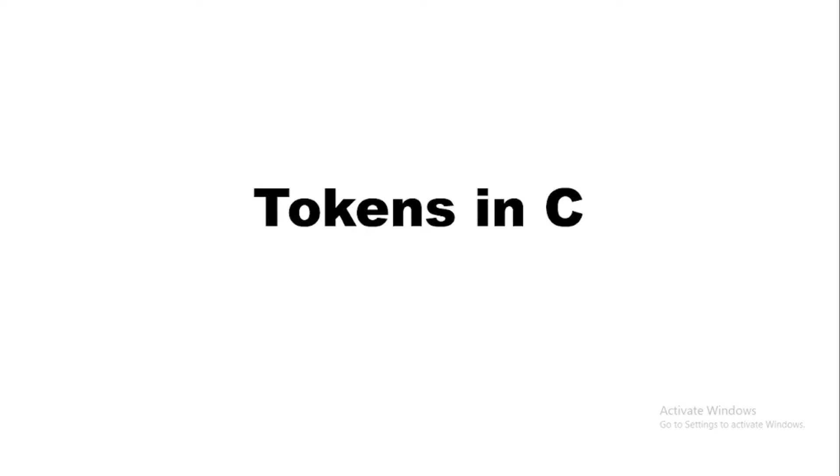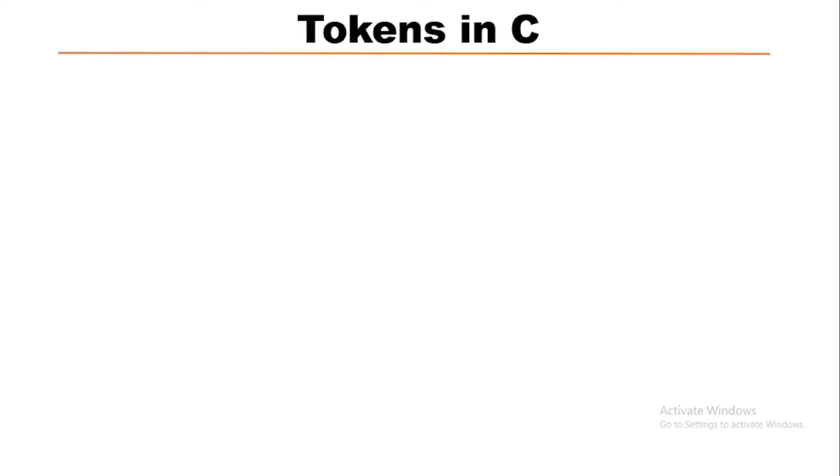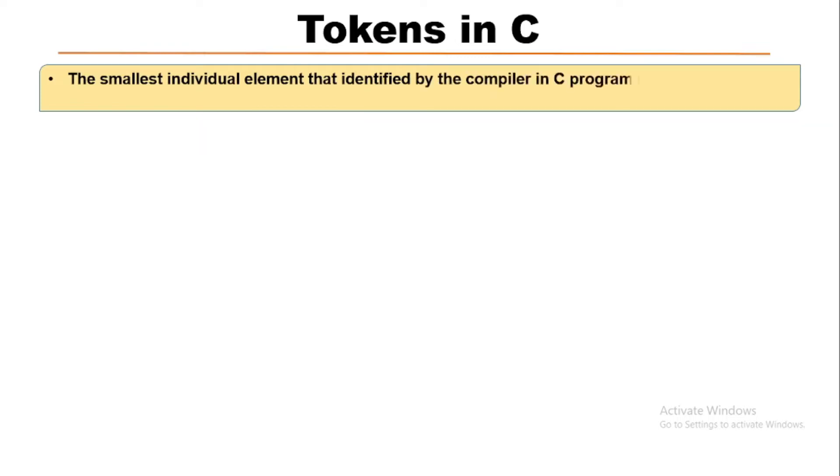In this lecture we will learn about the C tokens which are mainly used in programming language. The smallest individual element that is identified by the compiler in a C program is known as a C token. It may be a single character or sequence of characters.